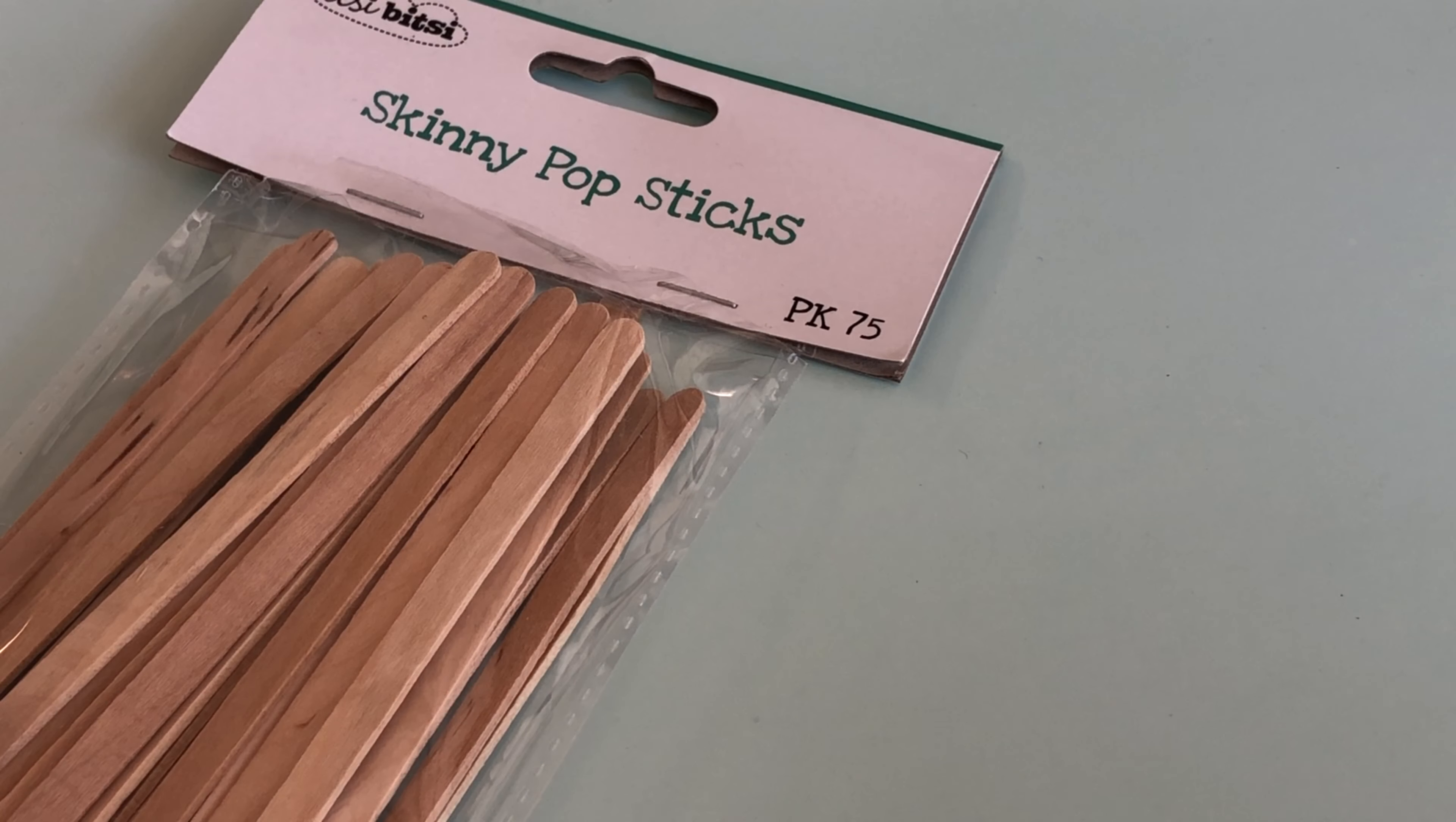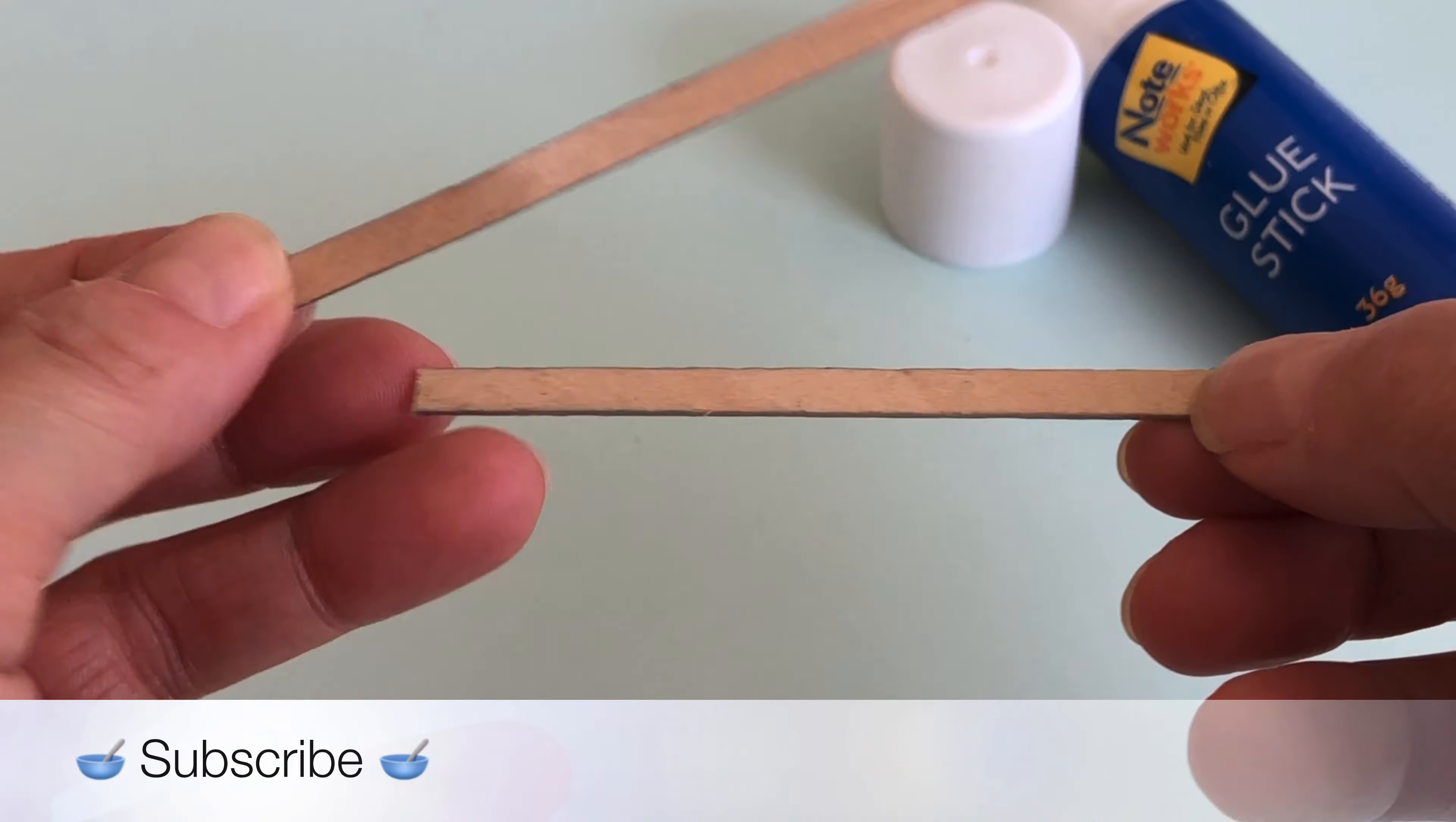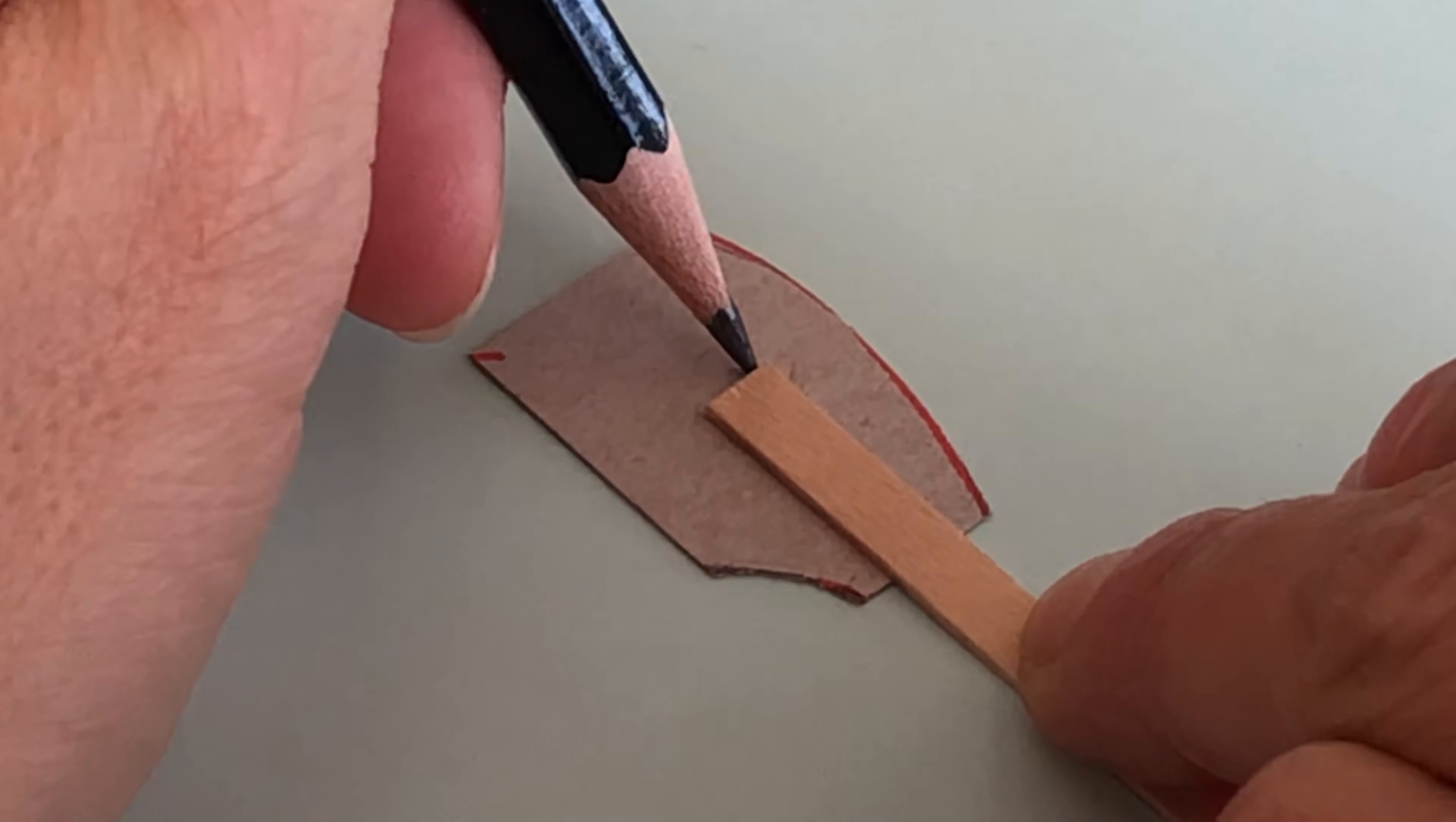For the spatula handle, measure and cut eight centimetres from the end of a skinny stick. Glue two together for the required thickness, then paint silver. Place the flat end of your skinny stick in the centre of your template.